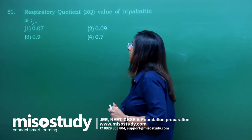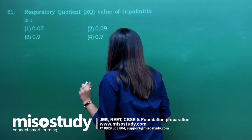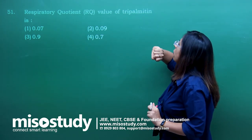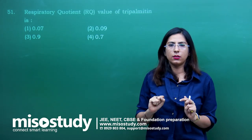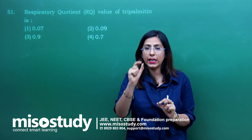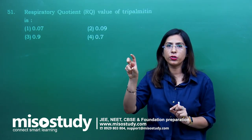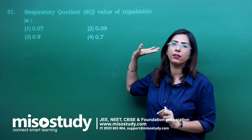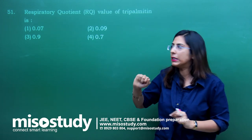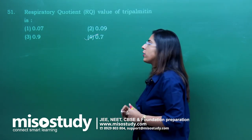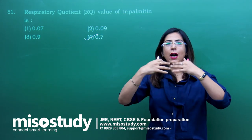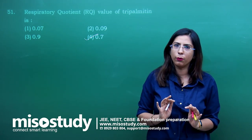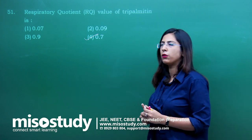Question number 51 — a very important and direct question from NCERT. The respiratory quotient value of tripalmitin is what? This is a direct question from NCERT. When respiratory quotient is mentioned for fats, tripalmitin is specifically noted. The correct option is 0.7 — the RQ value, which is the ratio of carbon dioxide produced to oxygen used. This was also a direct, very easy question.